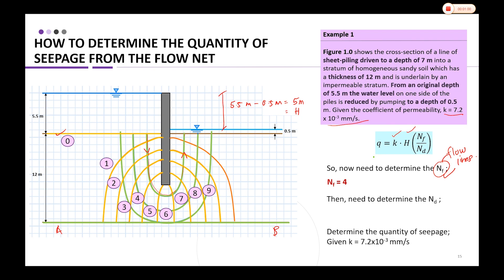Don't forget, the boundary here is also considered an equipotential line, so we have Nd equal to 11.